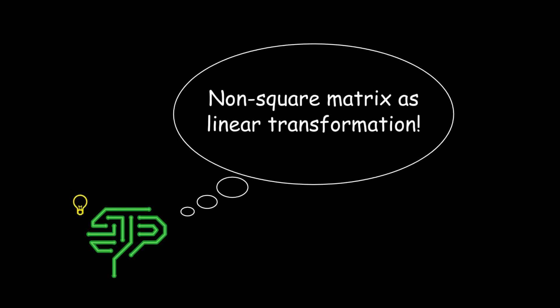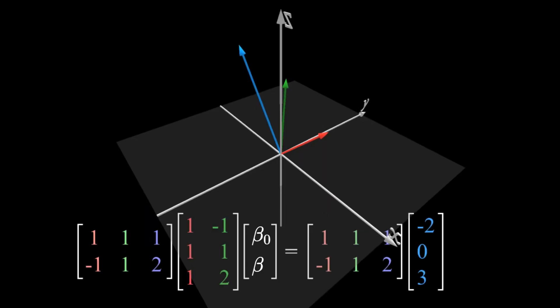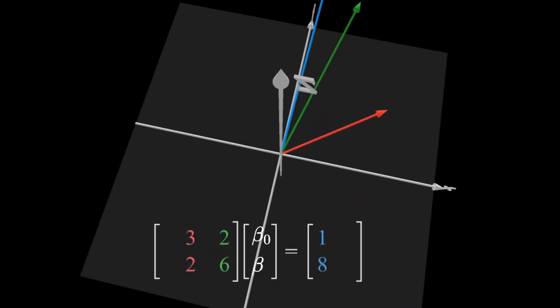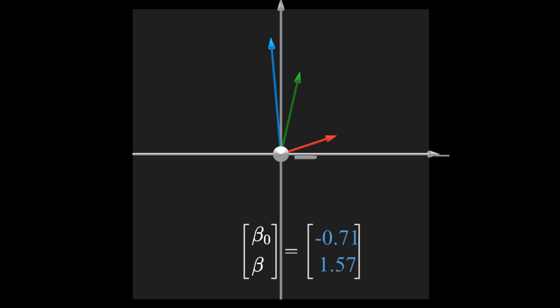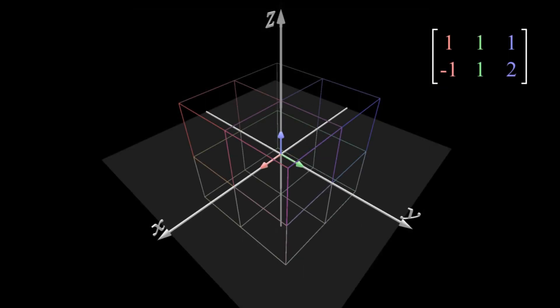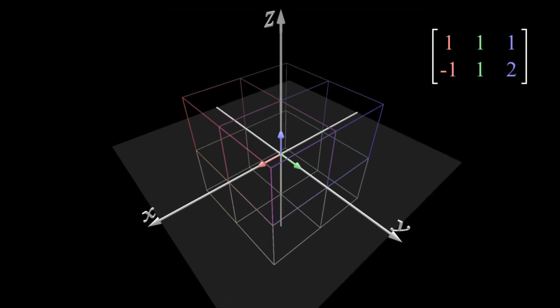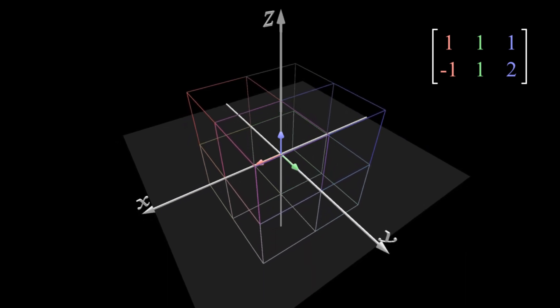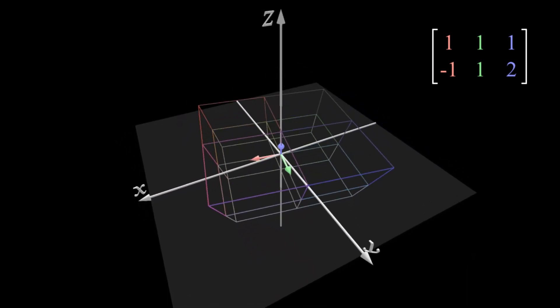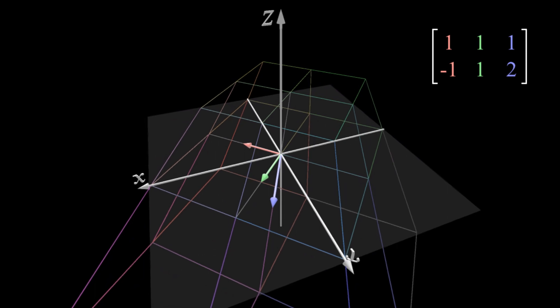To understand it geometrically though, we can think of these non-square matrices as linear transformations. In the next chapter, I will guide you through the solution to the normal equations. And before going into that, you will need to have a solid understanding of linear transformations, and in particular, linear transformations from 3D space to 2D space.